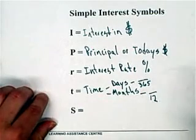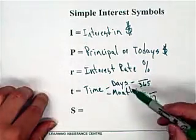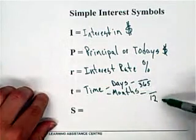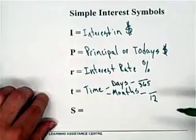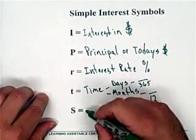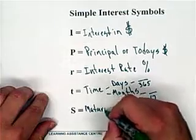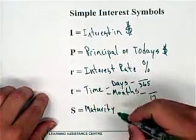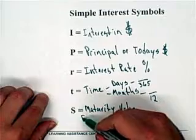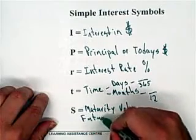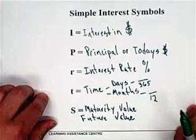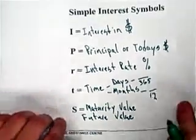So just be careful what the question says. If they want you to use days, divide by 365; if they want you to use months, divide by 12. Finally, S stands for maturity value — so what it's worth in the future, or future value. Those are our symbols for simple interest.